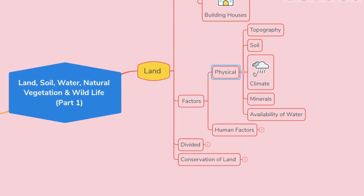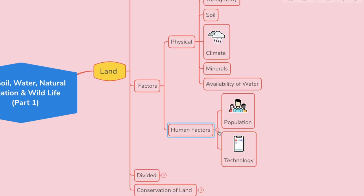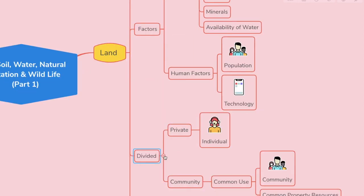Under physical factors you have topography, soil, climate, minerals, and availability of water. Under human factors you have population and technology.